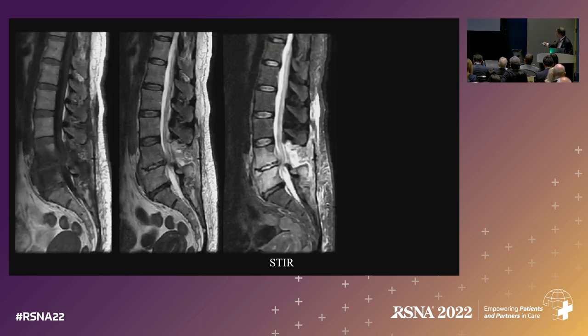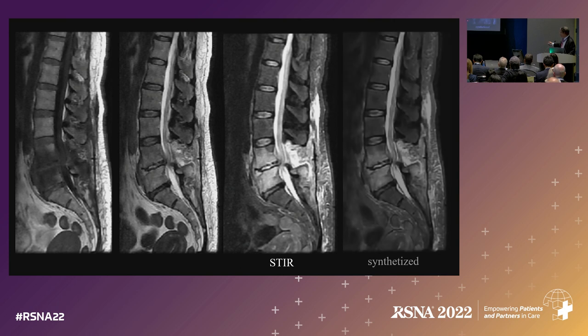The way it works: we use the T1 and the T2 to make an image that looks just like the original STIR. That's the original STIR; this is a synthetic STIR.